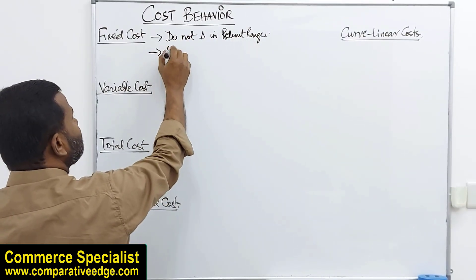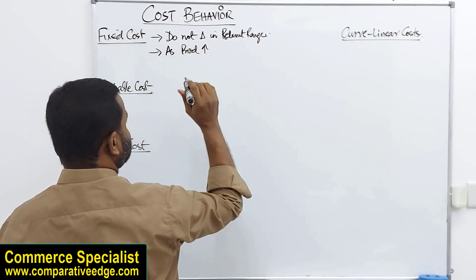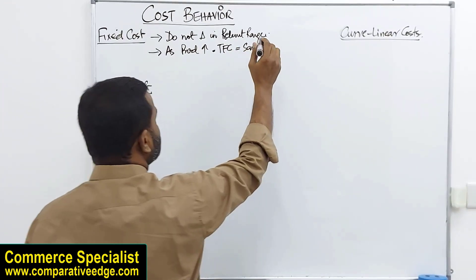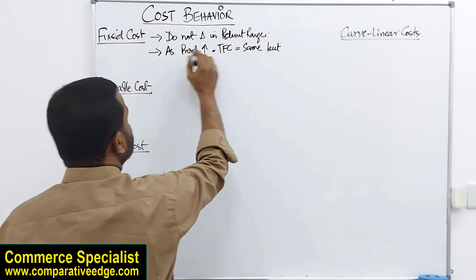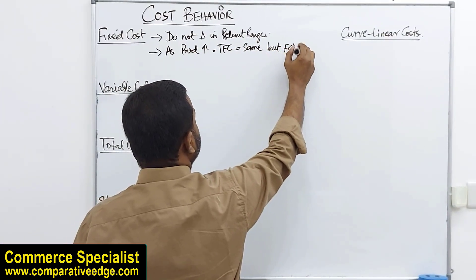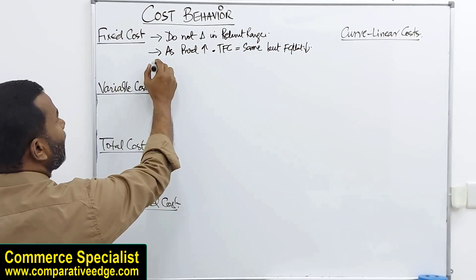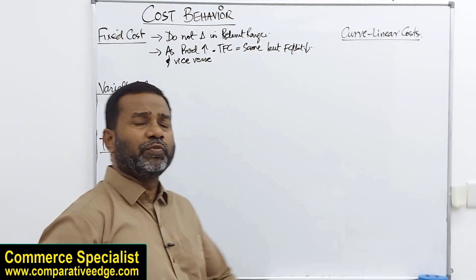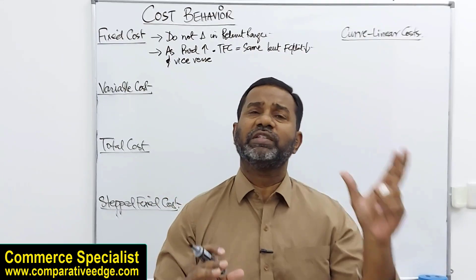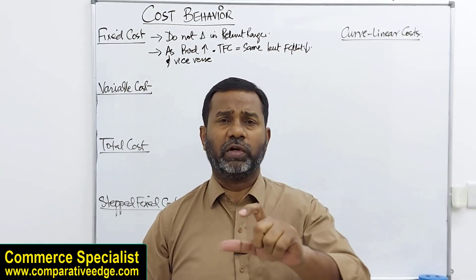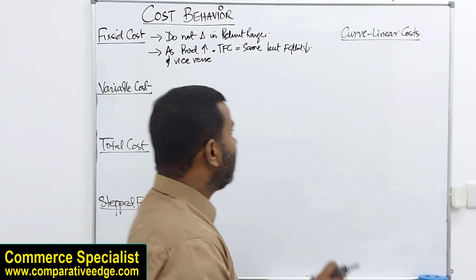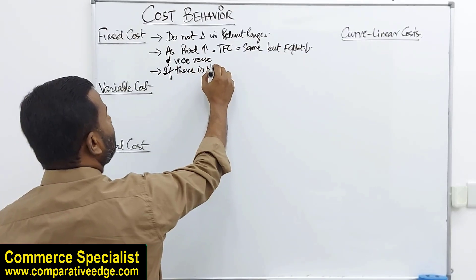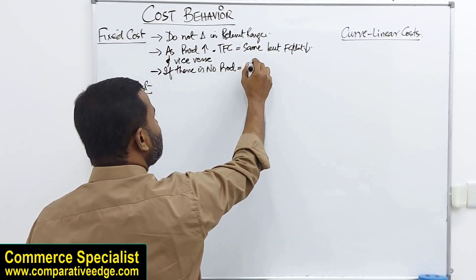As production increases, total fixed cost remains the same, but fixed cost per unit decreases. And vice versa: as production reduces, total fixed cost still remains the same, but fixed cost per unit increases. Also, if there is no production, we still incur fixed cost.